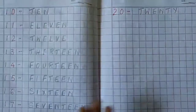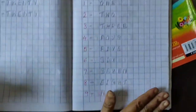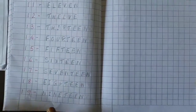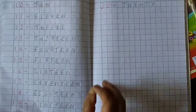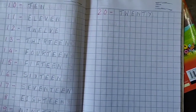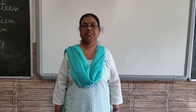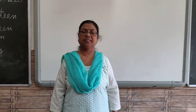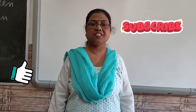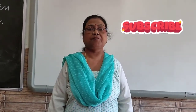Okay children, you have to complete as I have shown you in the copy. Take out your maths copy and write it neatly, nicely, with one letter in one box, one number in one box. Okay children, I hope you will learn number names 1 to 20. Please revise whatever I have given in the video. Okay, till then, bye bye, God bless you, bye.